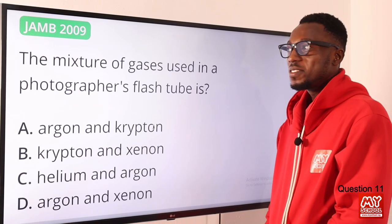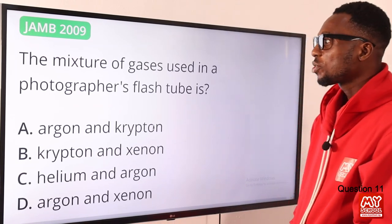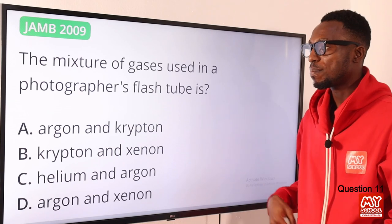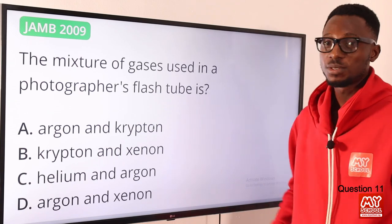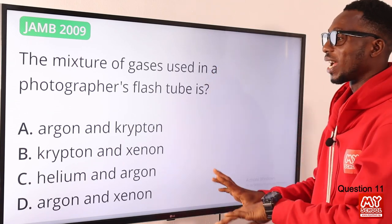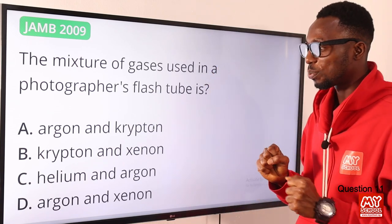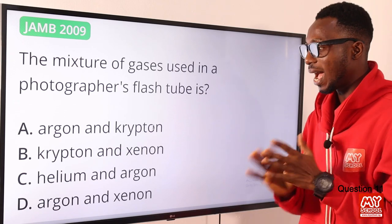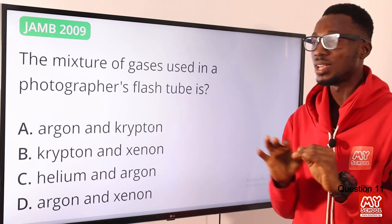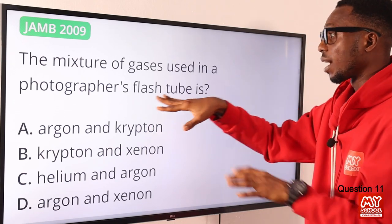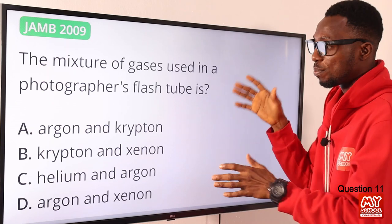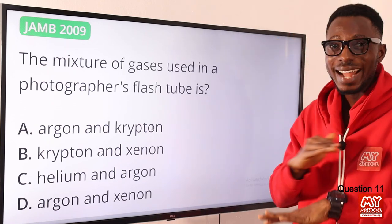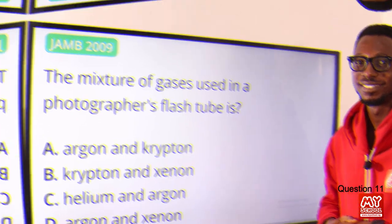Question 11: the mixture of gases used in a photographer's flash tube is krypton and xenon — noble gases used in high-speed photography. So the correct option is option B for krypton and xenon.